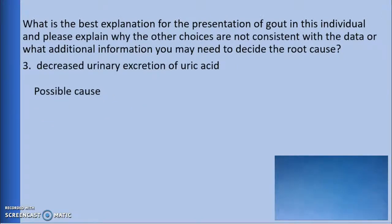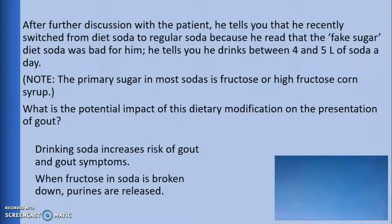Option 3: decreased urinary excretion of uric acid is another possible choice, because plasma urate levels would be elevated and urinary uric acids would be decreased, as is seen in this patient. If the uric acid is not being excreted properly, the plasma urate levels would increase. After further discussion with the patient, he tells you that he recently switched from diet soda to regular soda because he read that the artificial sugar in diet soda was bad for him.